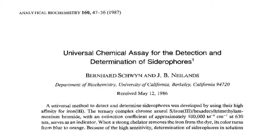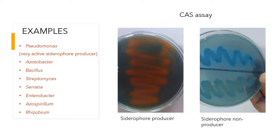About the CAS assay — this is the solid plate detection method. For practical exams, you should be able to give examples of siderophore-producing bacteria. Pseudomonas is a very active siderophore producer. Others include Azotobacter, some species of Bacillus, Streptomyces, Serratia, Enterobacter, Azospirillum, and Rhizobium.